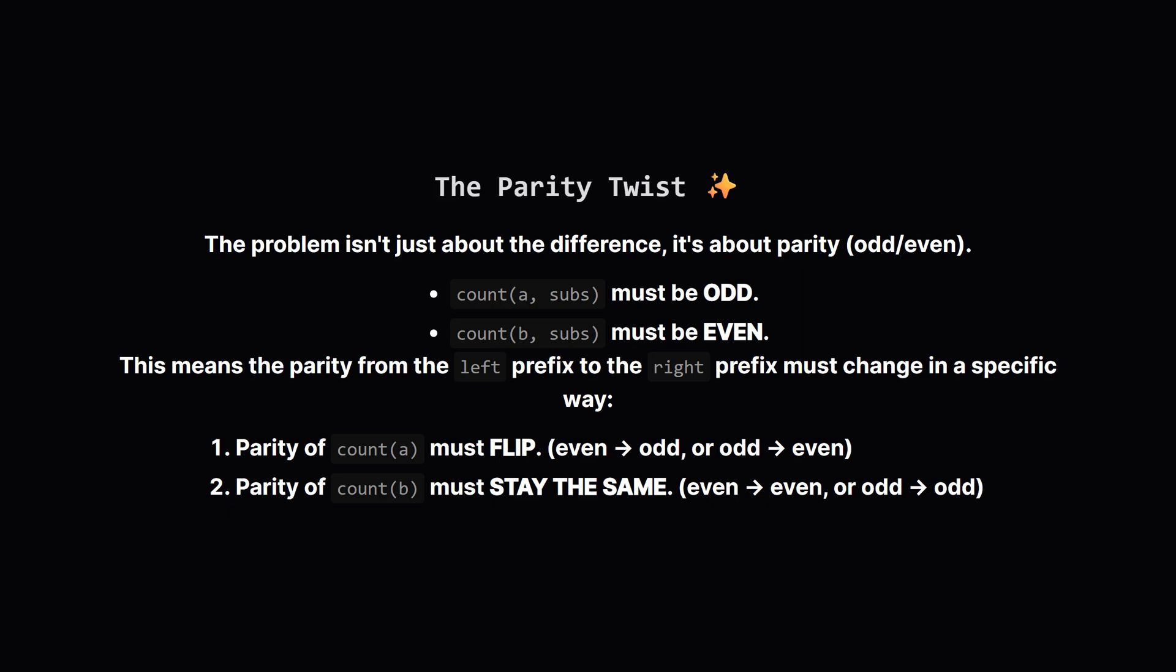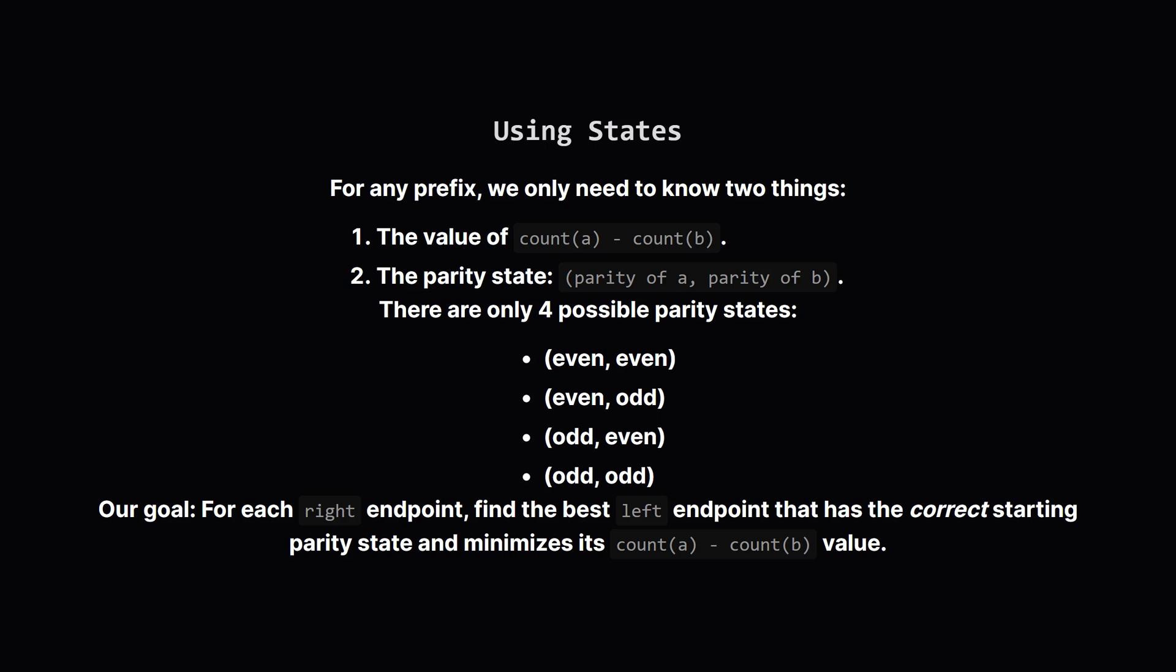This is the real trick to the problem. The count of A in our substring has to be odd, and the count of B has to be even. Let's think about what this means for our prefixes. For the count of character A to be odd in the substring, the parity of its count must flip between the left prefix and the right prefix. For example, if it was even at the left, it must be odd at the right. For character B, its count in the substring must be even. This means its parity must stay the same between the left and right prefixes. If it was odd at the left, it must still be odd at the right.